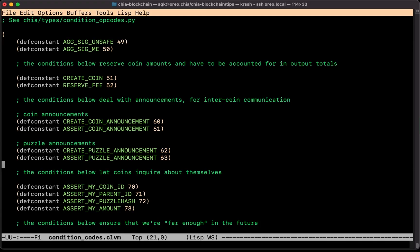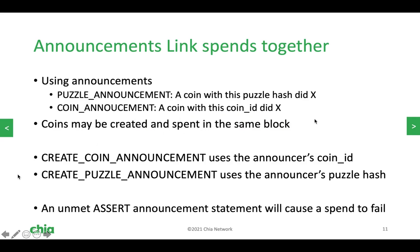We have two create announcements and two corresponding assertions. The conditions create coin announcement and create puzzle announcement are those broadcasts. In the puzzle announcement case, a coin with this exact puzzle has announced this message. In the coin announcement case, it's a coin with this exact coin ID — not just any coin with that puzzle, but only this one coin that could have existed only once on this blockchain in this combination of triples.